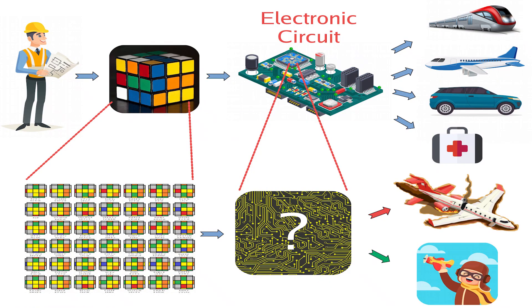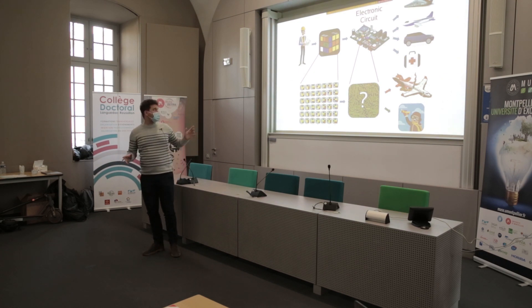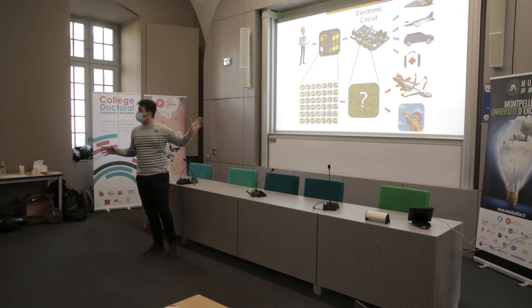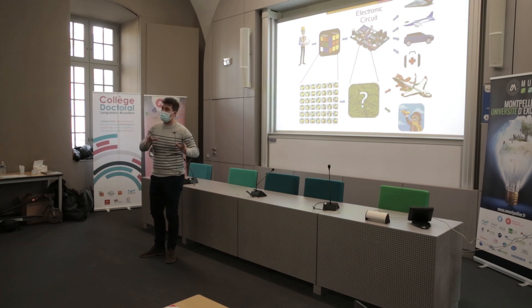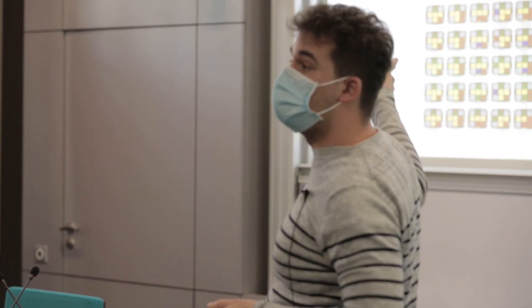The research team I'm working in has developed a process to help engineers build electronic circuits. This process involves the engineers designing a model of the circuit — a simplified view of the actual circuit. Next, a computer automatically transforms the model into a real electronic circuit. That's when all the puzzle-making happens, and this is why I call it the Rubik cube phase.